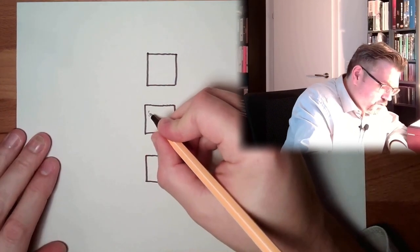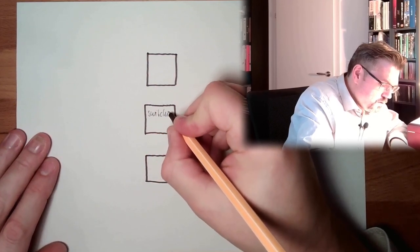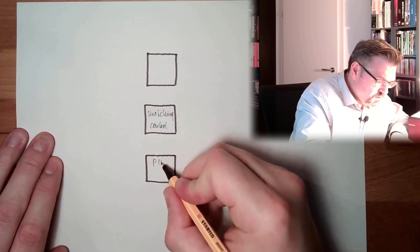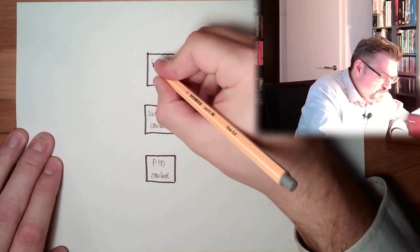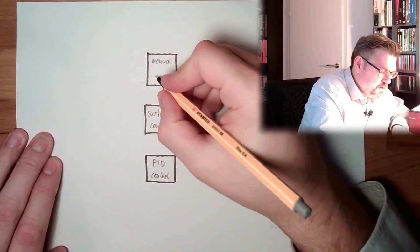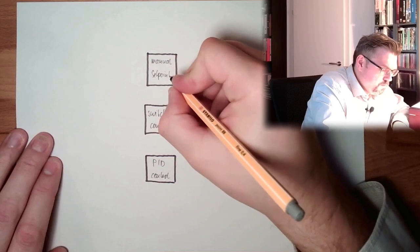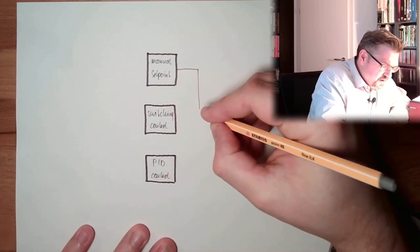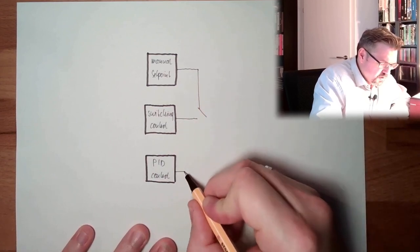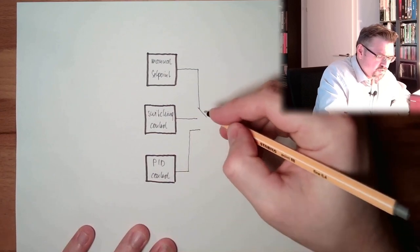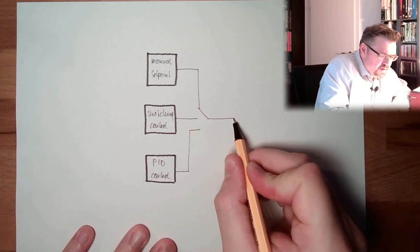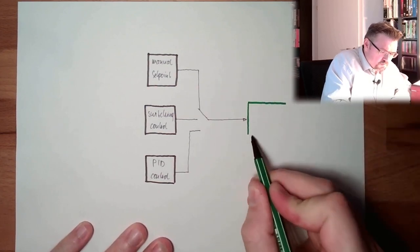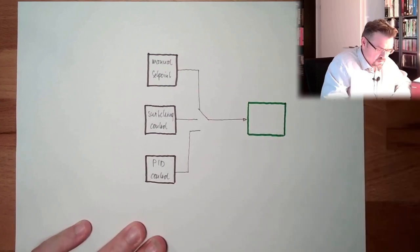So I want to have a switching controller. I want to have a PID controller. And here we have a manual set point. Here are the outputs - I want to switch them. I want to select if I am using manual, or if I am using a switching controller, or if I am using a PID controller. And this is then the Peltier element - the correcting element, the adjustment element.